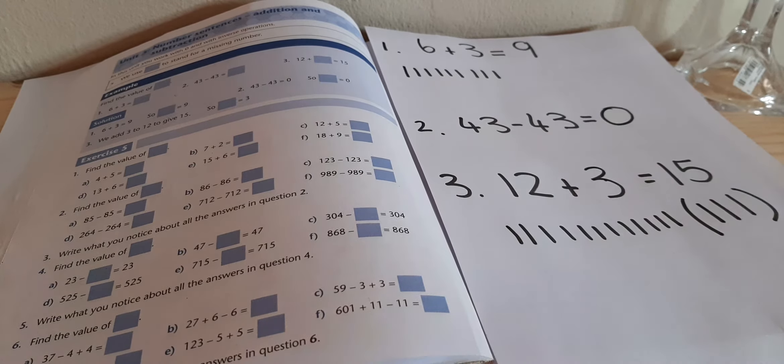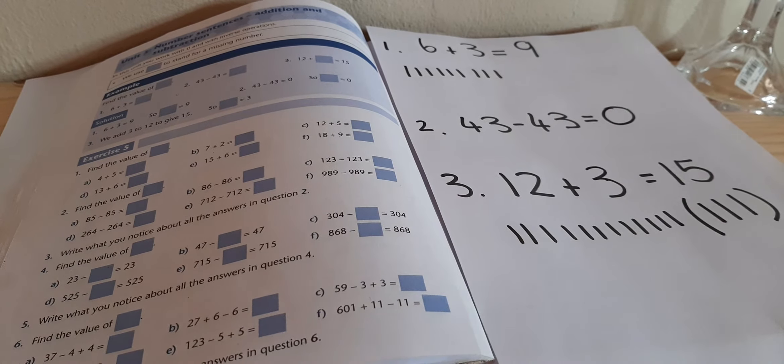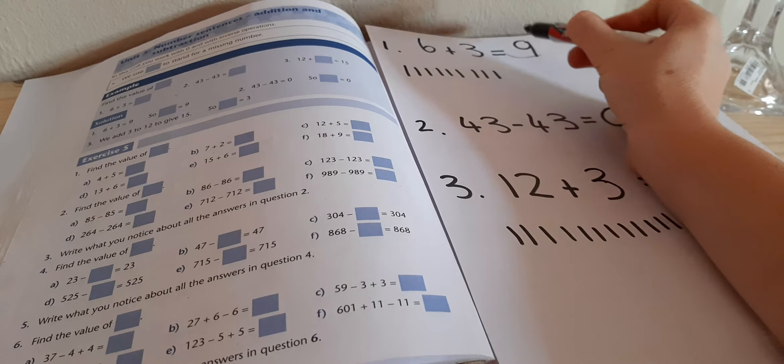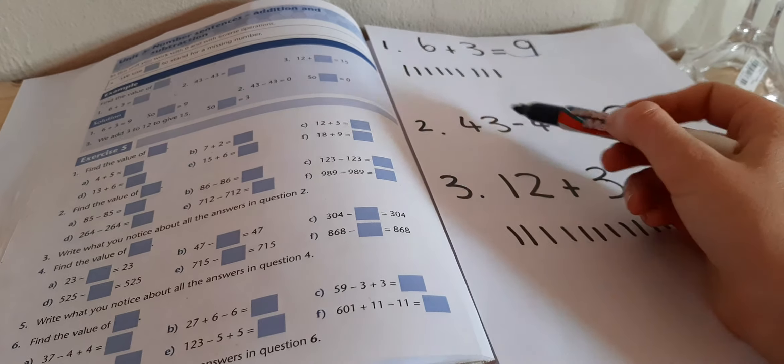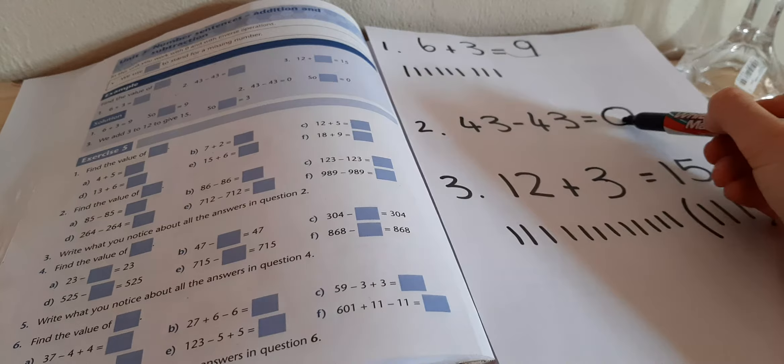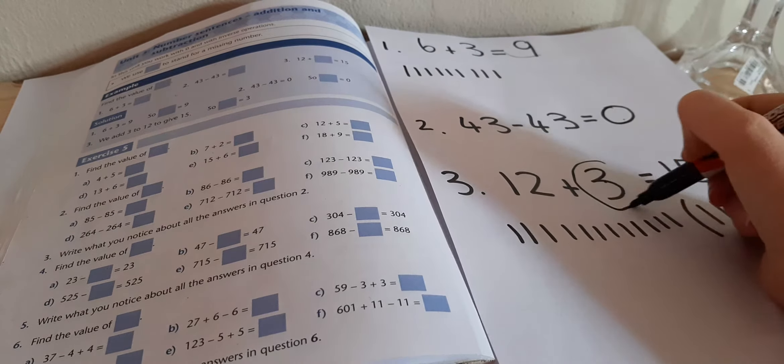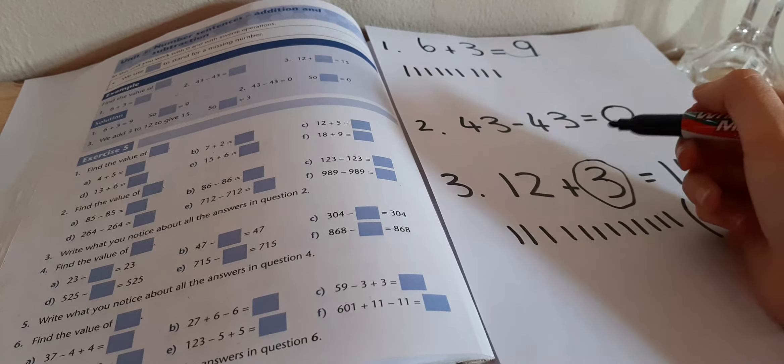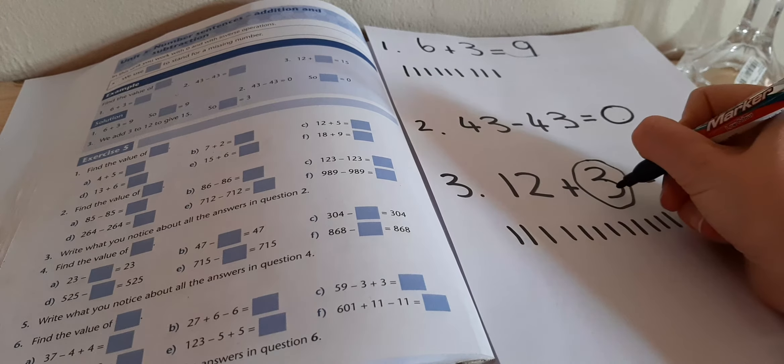Again, it's also good just to learn your number bonds off by heart. So remember, if the blank is on the right hand side, you have to add to get it. If you're subtracting, you have to subtract to get it. If the blank is here, you have to add on or subtract in order to get the missing number.